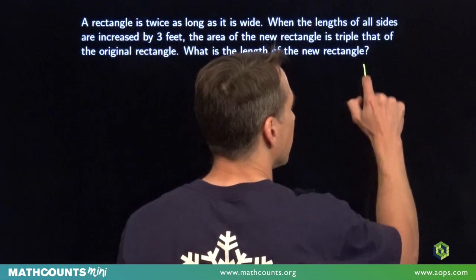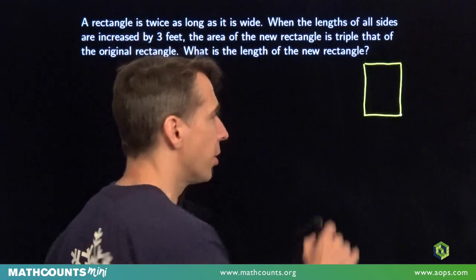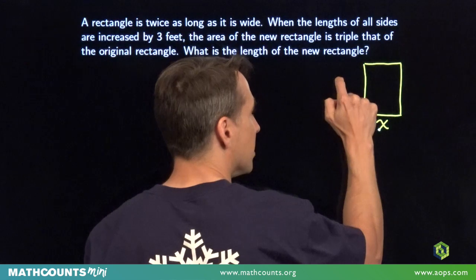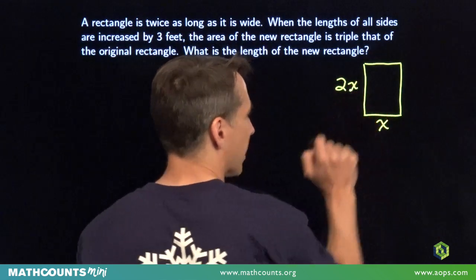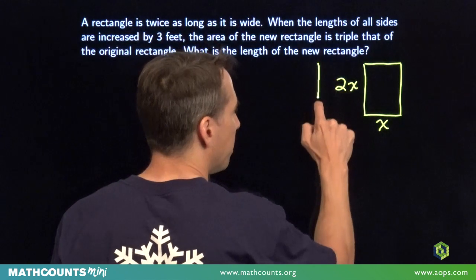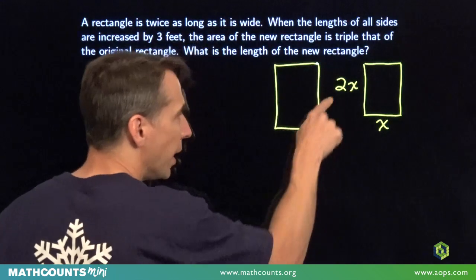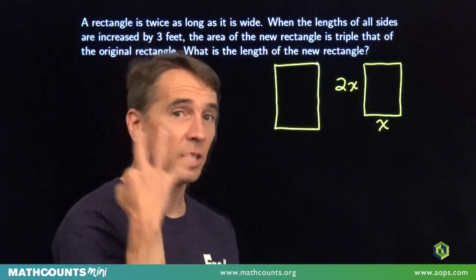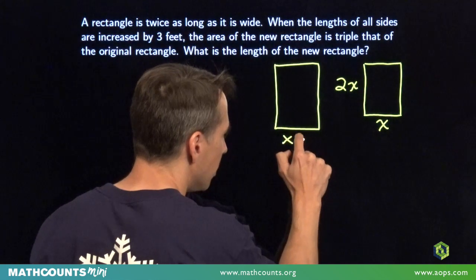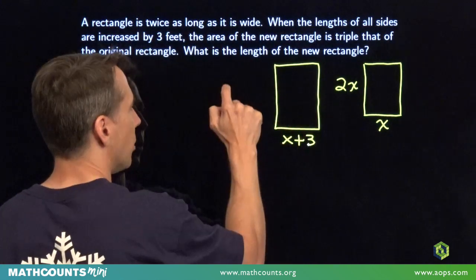First, our original rectangle. Its length is double its width. So we're going to say its width is x and its length then is double the width is 2x. And then our new rectangle. It's a little bit bigger than the original rectangle because we get the new rectangle by increasing each of these dimensions by 3. So our width will be x plus 3, and the length will be 2x plus 3.